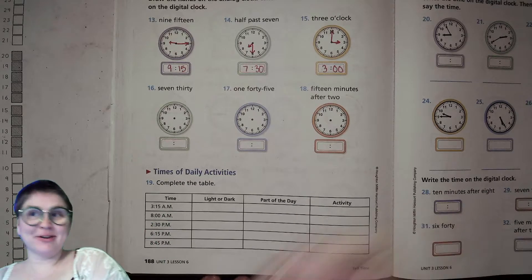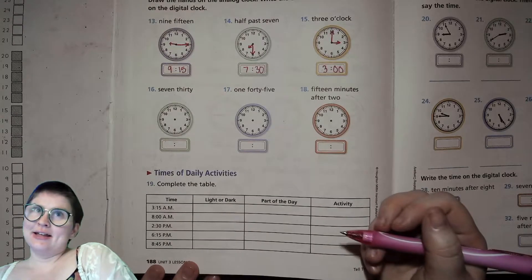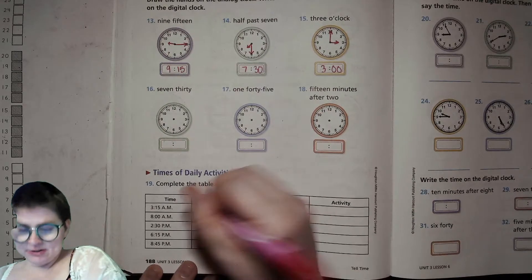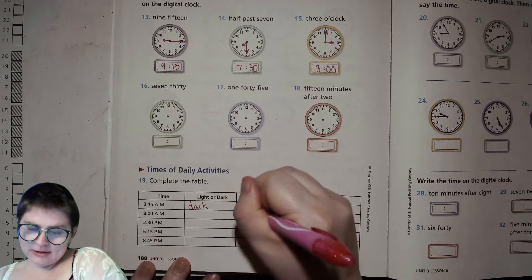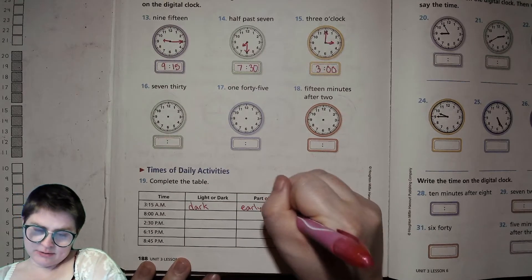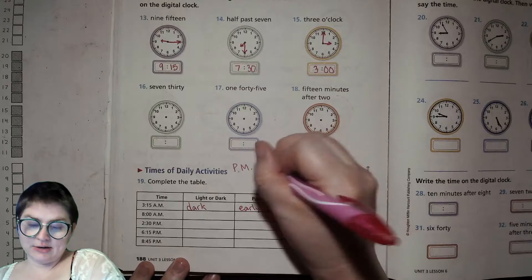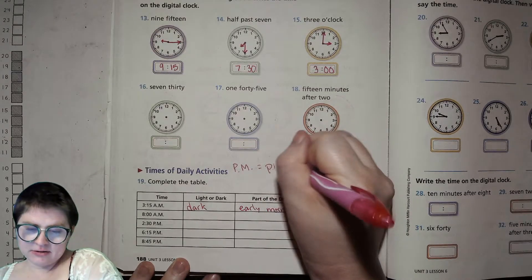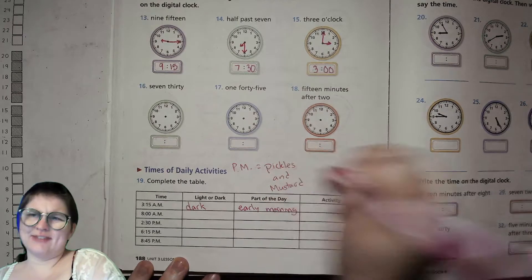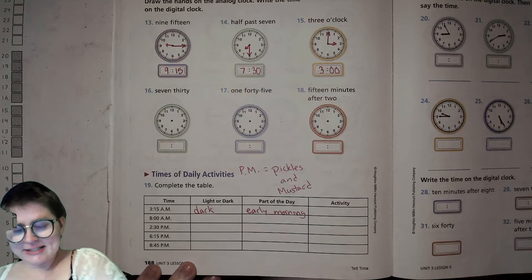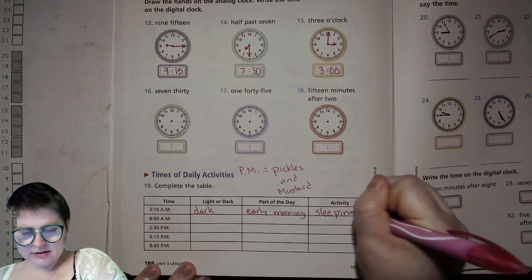If you have a better way of remembering that, you can let me know. So 3:15 AM. That's 3:15 in the morning, right? So it's probably dark out. Sun has not yet risen. Part of the day. Early morning. I'll put right here. PM. This is not what it officially stands for. This is just the way I remember it. Pickles and mustard. I'm not going to have that for breakfast. I mean, maybe you would, but I don't. An activity you should be doing is sleeping at 3:15 AM. You should be tucked in. Sleeping.